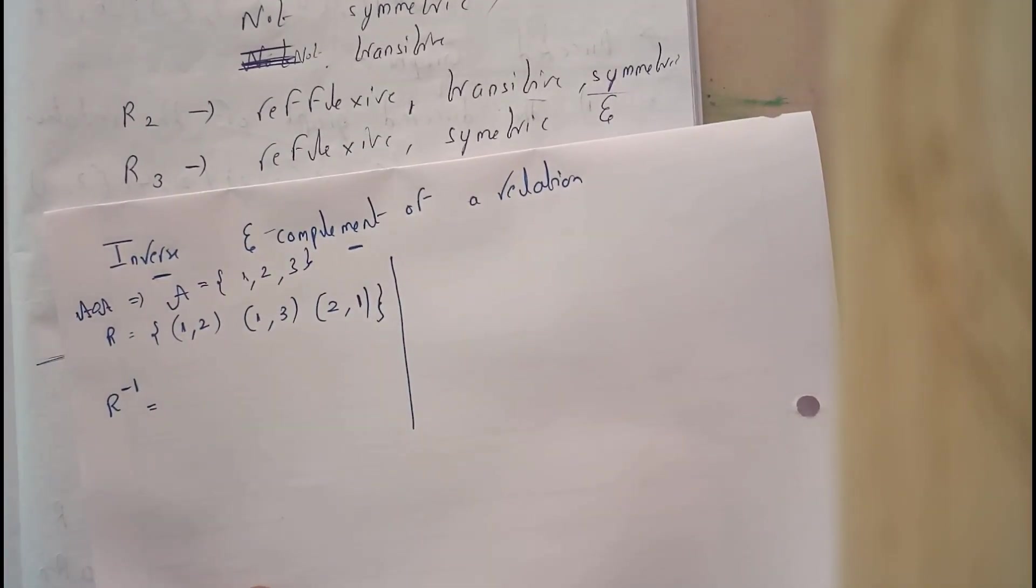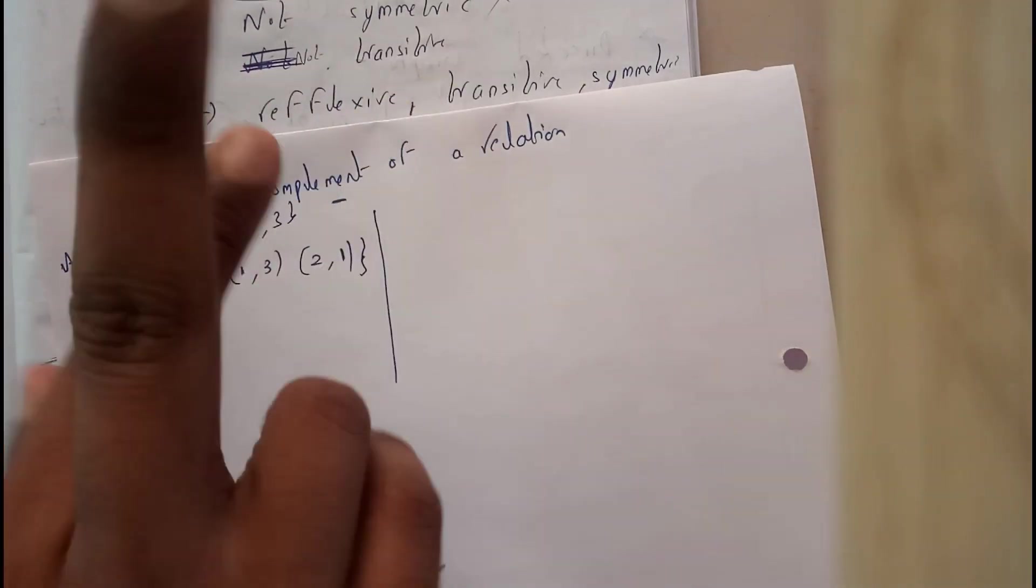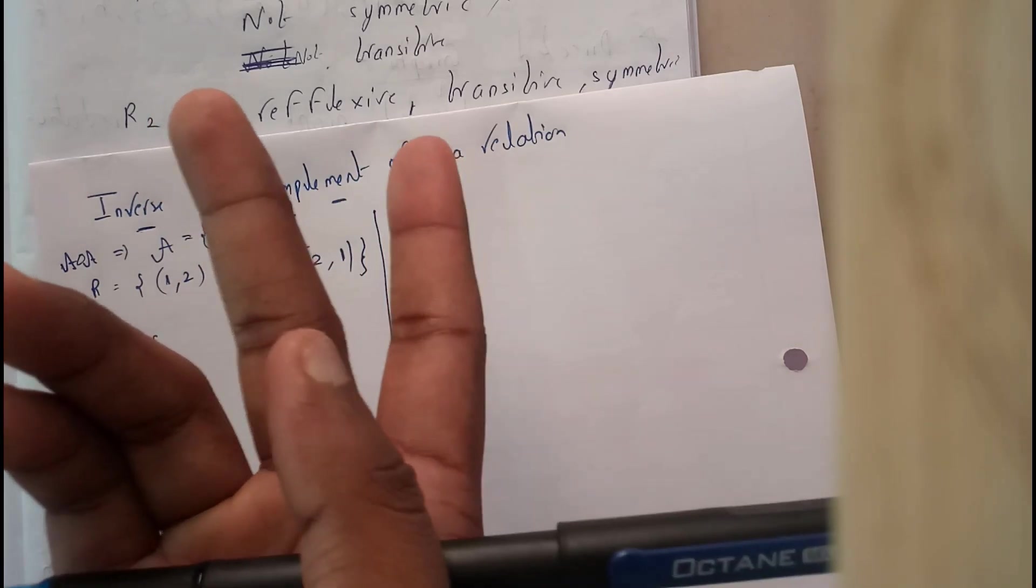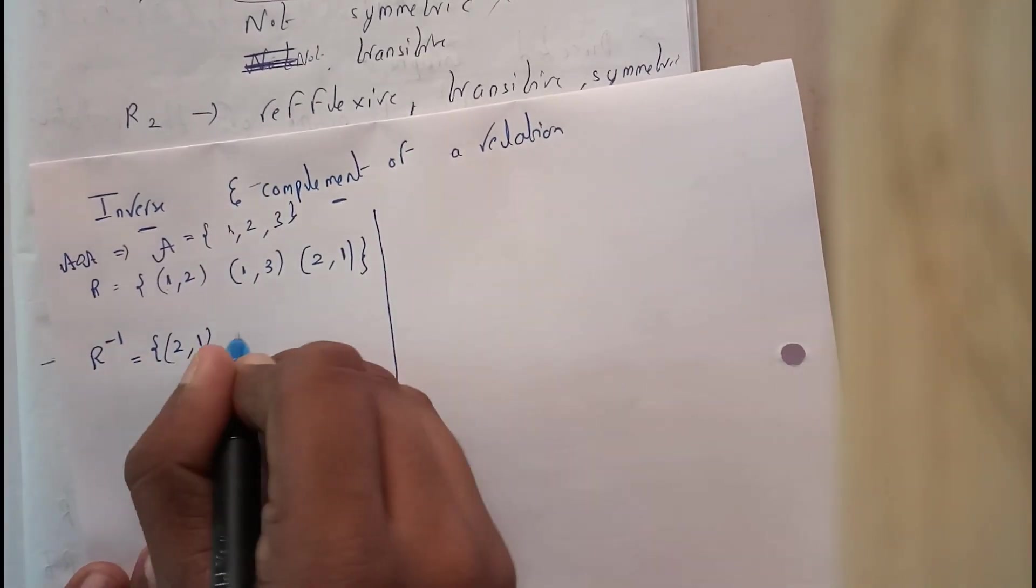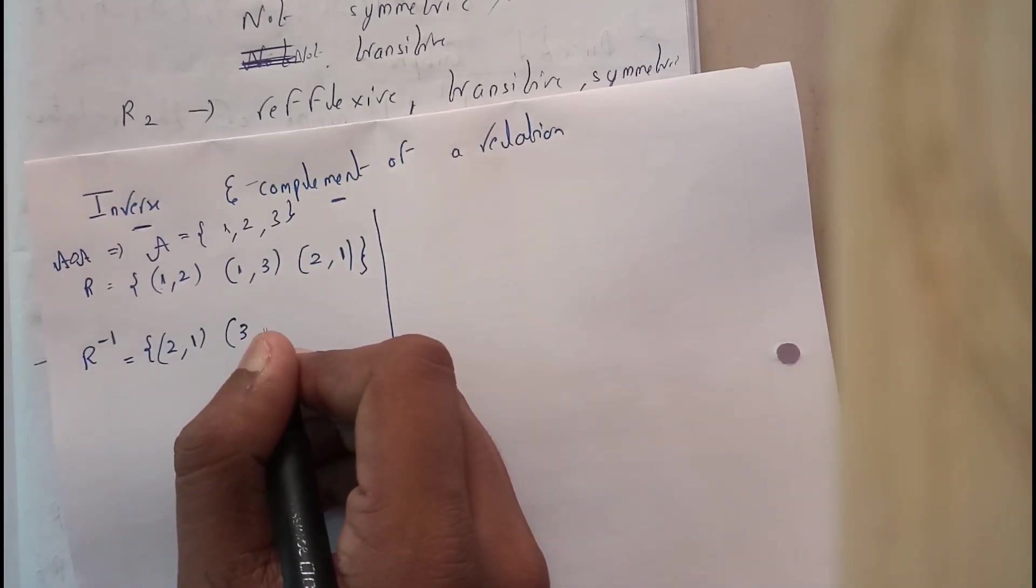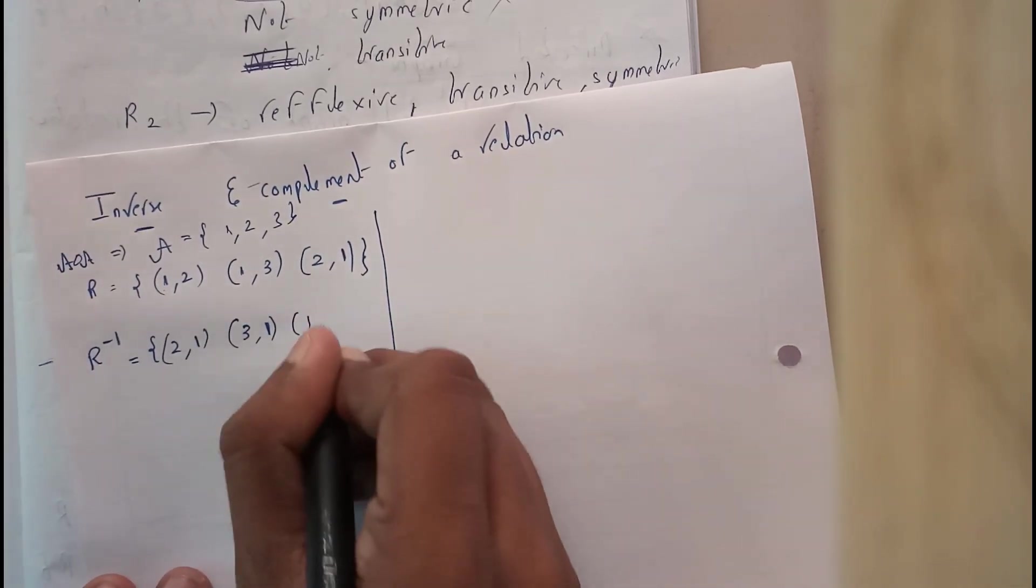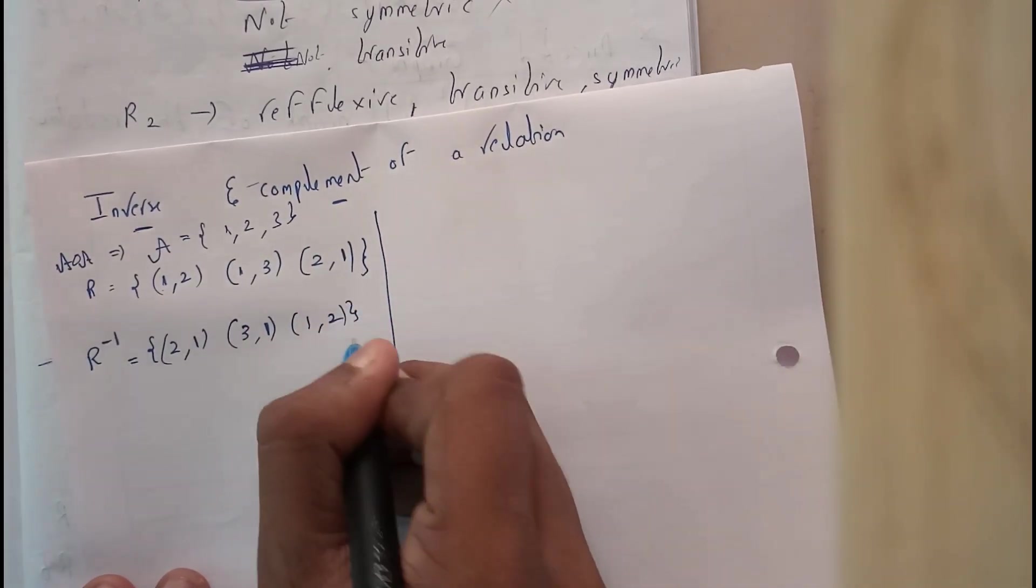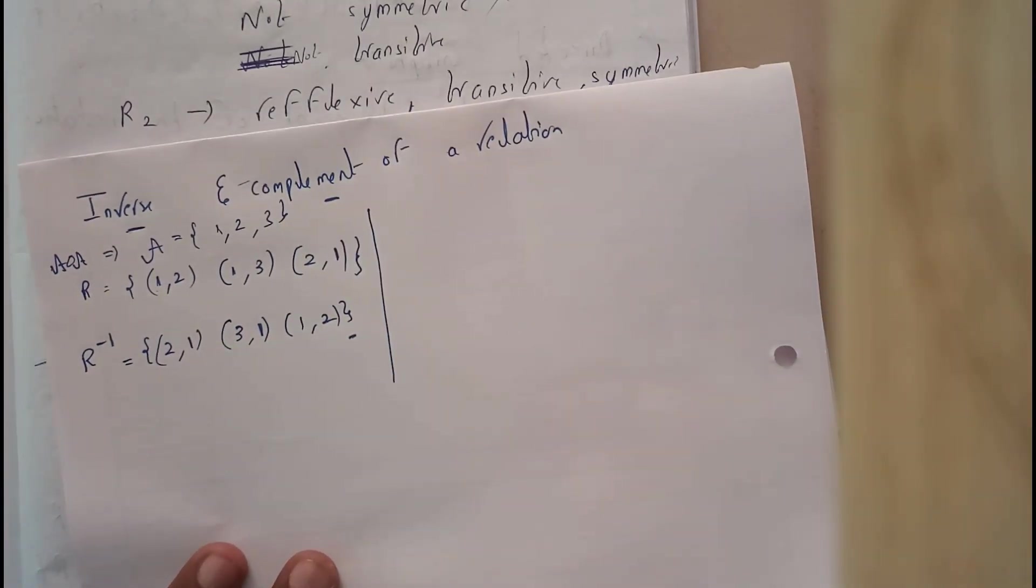We need to find R inverse. R inverse is nothing but the mirror image. (1,2) becomes (2,1), just shuffling the places where (a,b) is changed to (b,a). So we get (2,1), (3,1), and (1,2). I hope you are clear now with inverse of a relation.